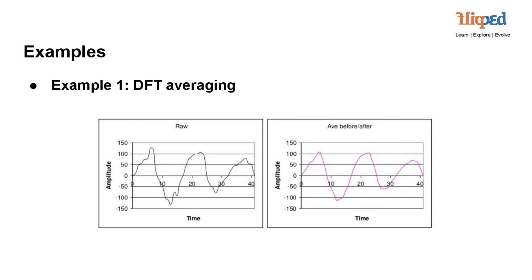Applications: DFT averaging is widely used in signal processing to improve the quality of spectral analysis. It enhances the visibility of true signal components and reduces the prominence of noise or interference. This technique is particularly beneficial when dealing with signals corrupted by random fluctuations or disturbances. In summary, example 1 demonstrates the effectiveness of DFT averaging in enhancing signal representation quality. By smoothing out fluctuations and reducing noise, DFT averaging provides a clearer insight into the true characteristics of the signal, making it an essential tool in various signal processing applications.